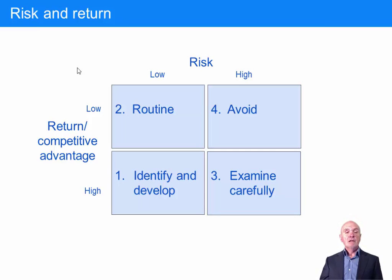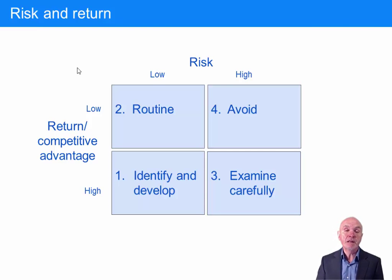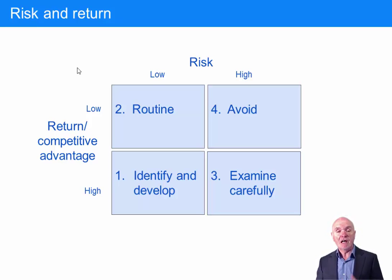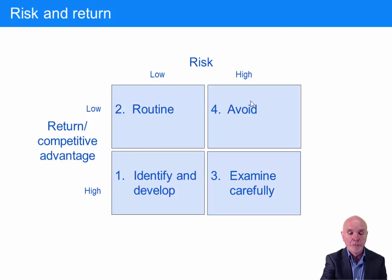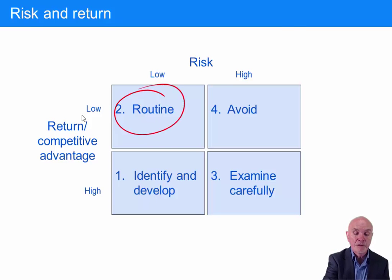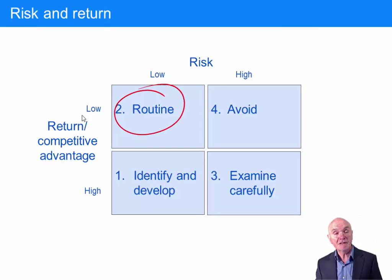We can look at risk and return — how much risk it's maybe worth taking for a certain amount of return. Starting at the top left: the numbers don't really mean particularly much here. We have low risk, low return. This is just the bread and butter, the ordinary course of a business.